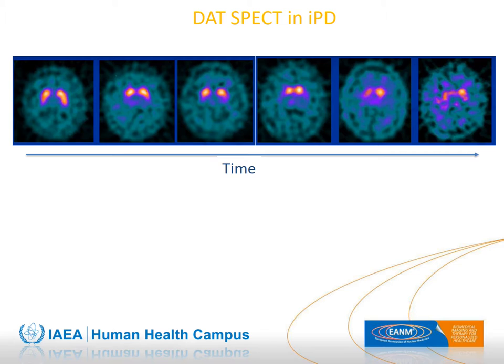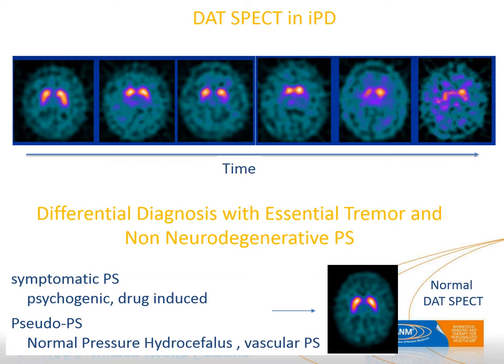The pattern of reduced uptake in DAT-SPECT in idiopathic Parkinson's disease is characterized by reduced uptake first in the putamen contralateral to the most affected body side, then the ipsilateral putamen, followed by the caudate, following the course of disease. DAT-SPECT can support differential diagnosis with essential tremor and non-neurodegenerative Parkinsonism including symptomatic forms such as psychogenic and drug-induced Parkinsonism, as well as pseudoparkinsonism such as normal pressure hydrocephalus and vascular Parkinsonism, where the DAT scan is normal.